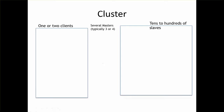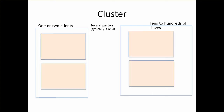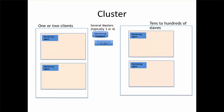At a very high level, you will have one or two clients, several masters — typically three to four — and tens to hundreds of slaves. I am visualizing on the left side the clients, on the right side all the slave processes that will be running, and in the middle you will have the masters.